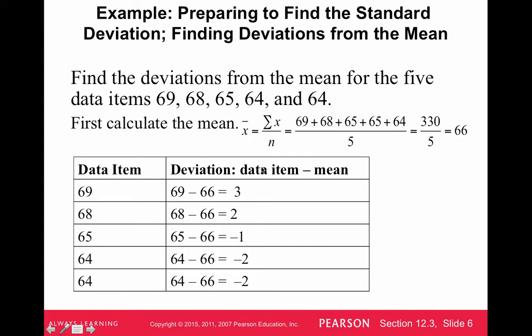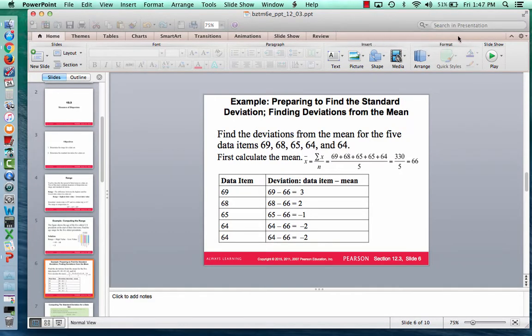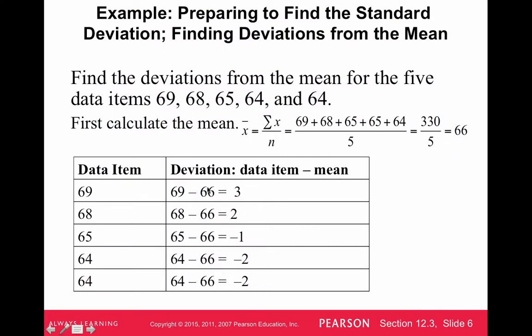So what is a deviation? A deviation is always the data item minus the mean. So in other words, the distance that the data item is from the mean. So to compute each deviation, we just take the data item minus the mean. So for the first age, it's 69. The mean was 66. So we subtract that, and we get three. So in other words, the data item 69 is three years above the mean. So if you look at each one of these, 68 is two years above the mean. 65 has a deviation of negative one, which means that 65 is one year below the mean. So negative deviations mean below the mean, and positive deviations mean above the mean.